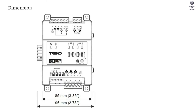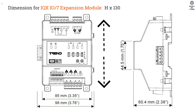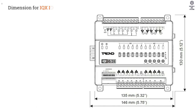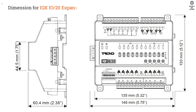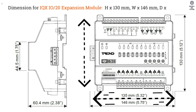Dimensions for IQXIO 7 Expansion Module: Height 130 mm, Width 96 mm, Depth 60.4 mm. Dimensions for IQXIO 20 Expansion Module: Height 130 mm, Width 146 mm, Depth 60.4 mm.